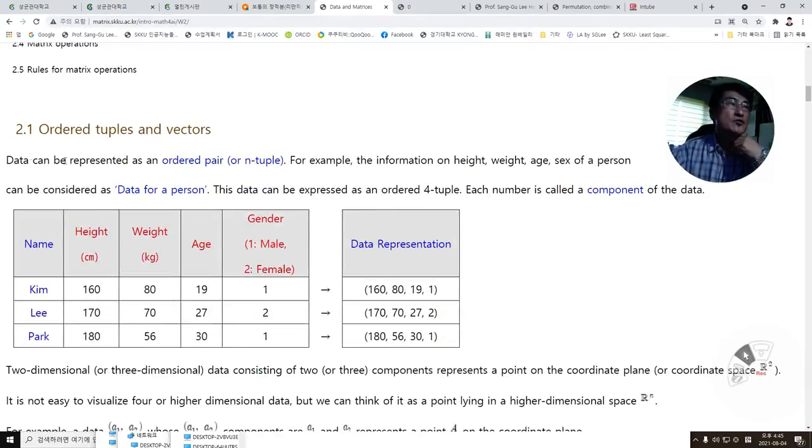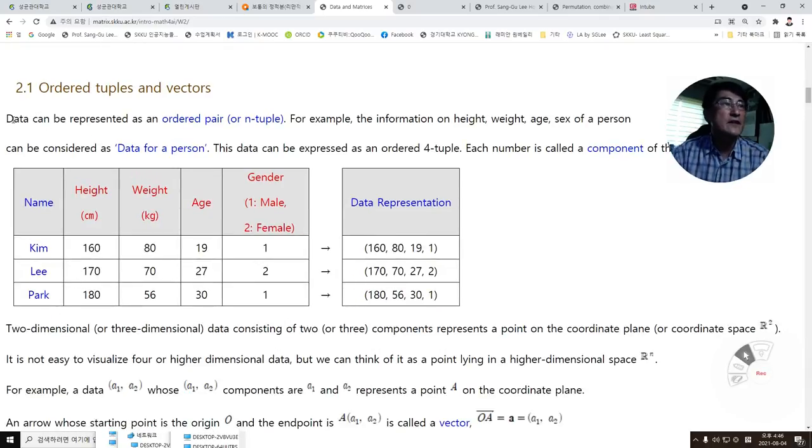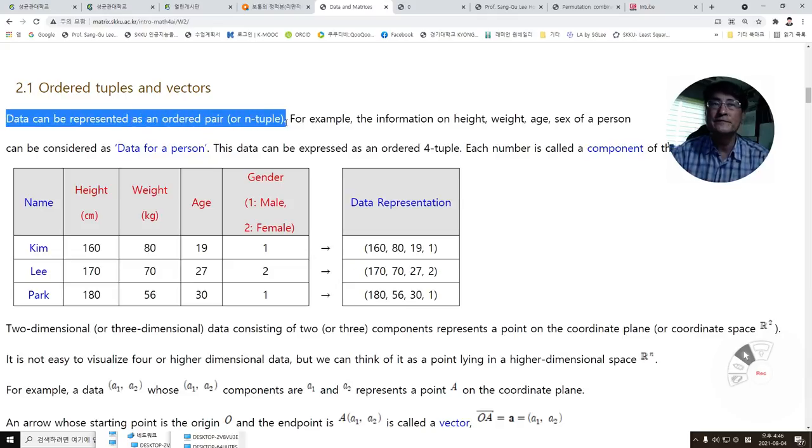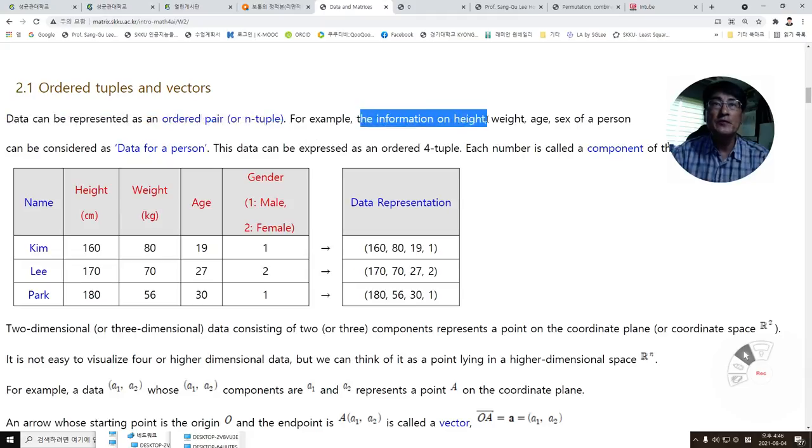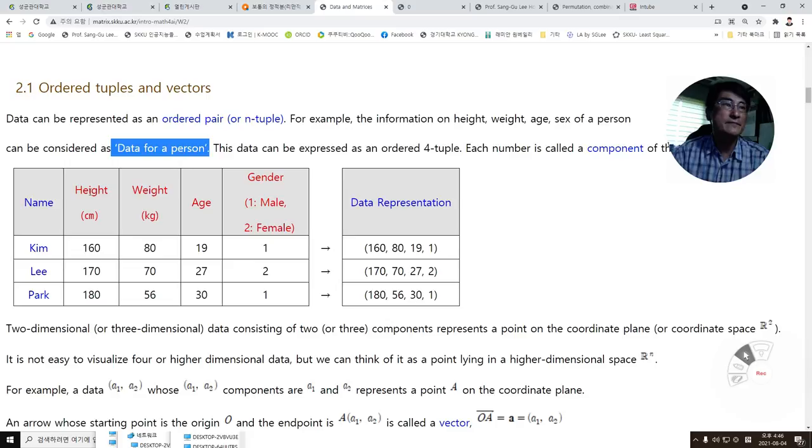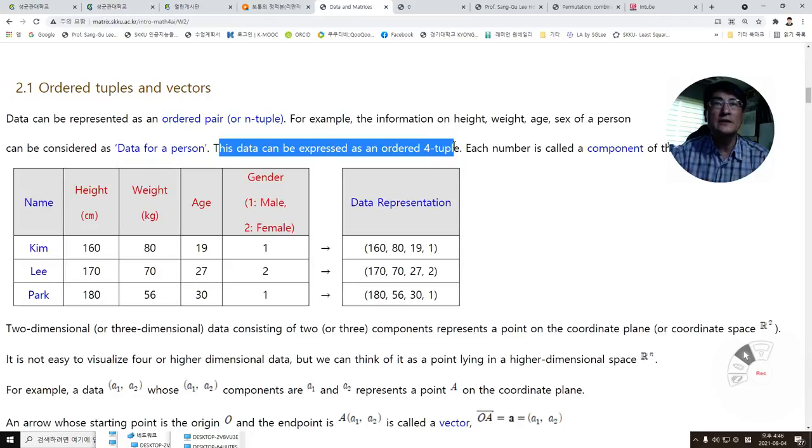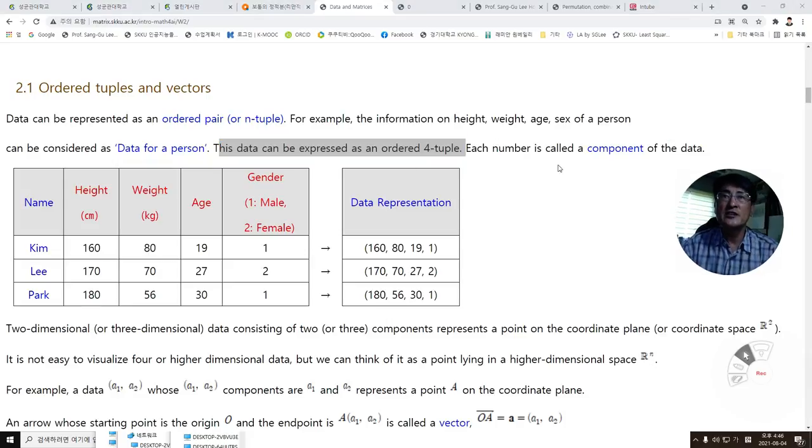Section 2.1: Ordered tuples and vectors. Data can be represented as an ordered pair or an n-tuple. For example, the information on height, weight, age, and sex of a person can be considered as data for a person. This data can be expressed as an ordered four-tuple. Each number in the table is considered a component of a data.